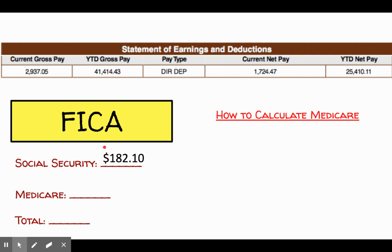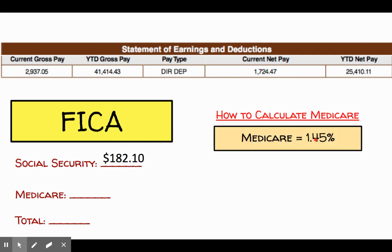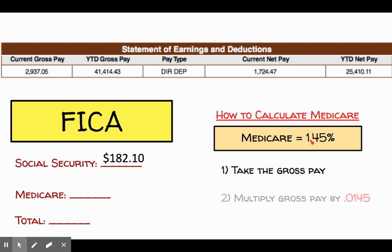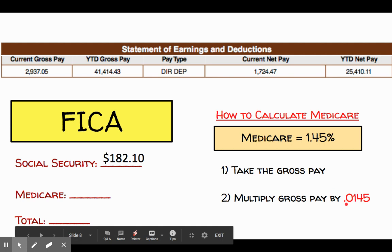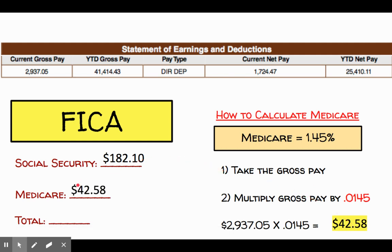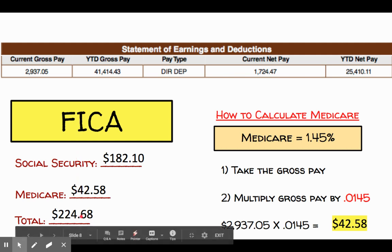For Medicare, it's pretty much the same setup. Medicare is 1.45%, so I take my gross pay again and multiply it — moving the decimal two places to get 0.0145. My Medicare contribution would be $42.58. I then add these two numbers together, and that gives me the entirety of my FICA contribution, which equals $224.68.